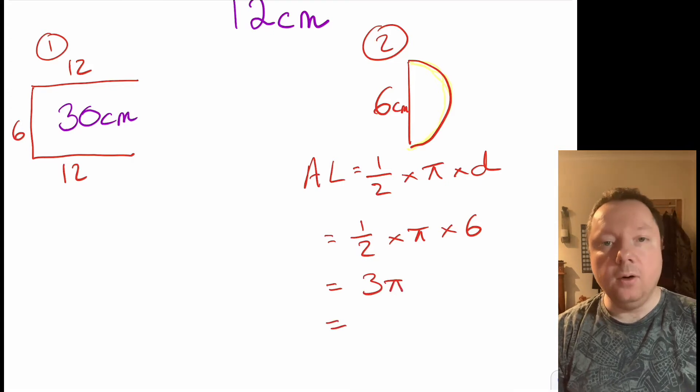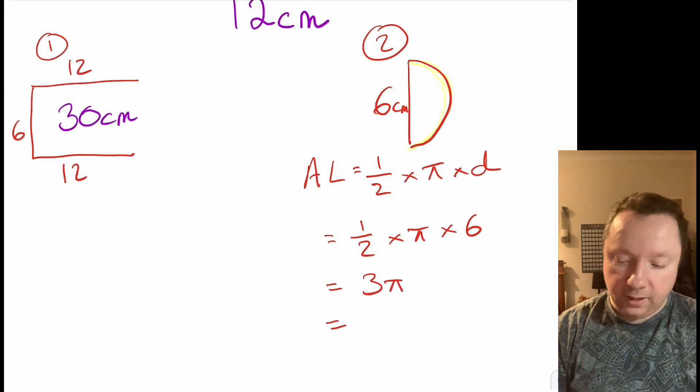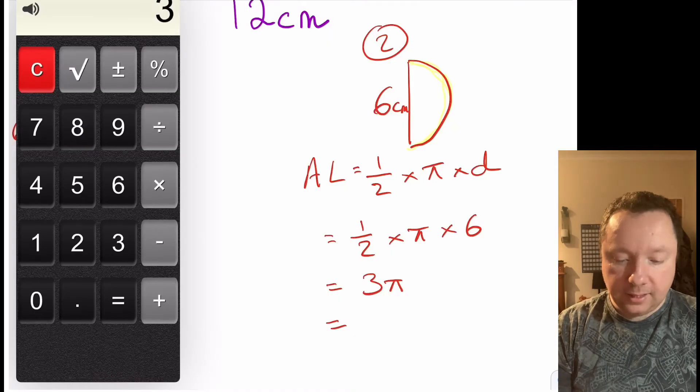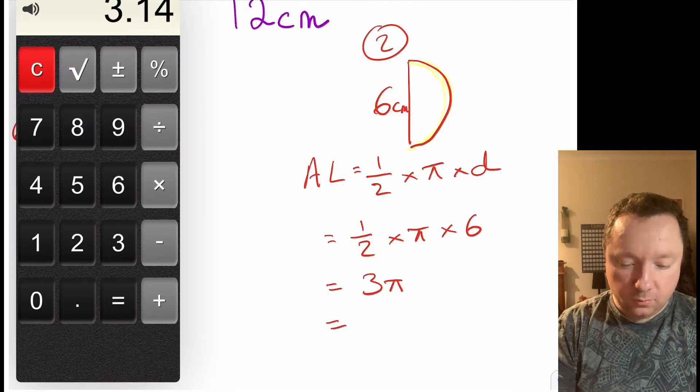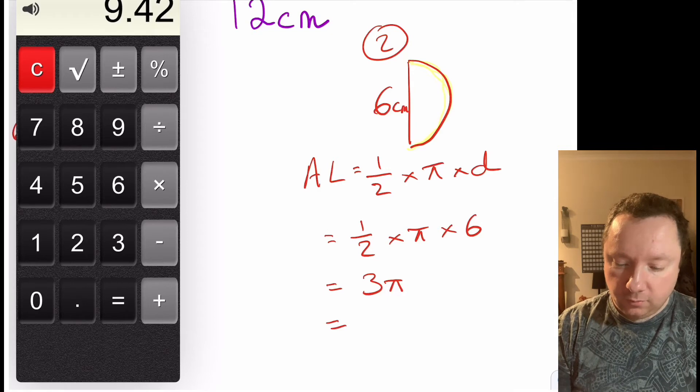Which we'll need as a number because we've got 30 centimetres already. So we've got three times pi, 3.14, which is 9.42.